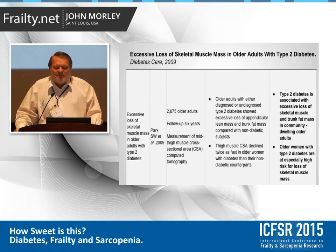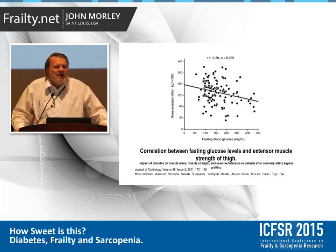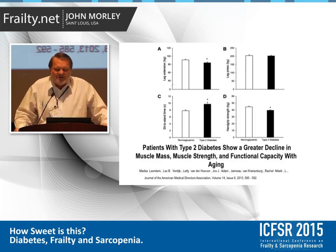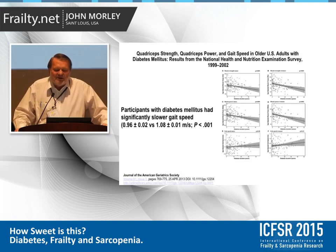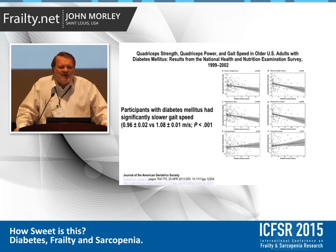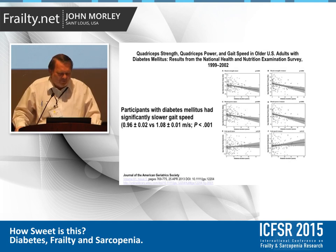Another study shows excessive loss of muscle mass, with a correlation between the height of glucose levels and the amount of muscle mass being lost. Patients with type 2 diabetes show a greater decline in muscle mass, strength, and functional capacity with aging. Diabetics are also slower walkers — and there are many reasons for this. Remember, it's not just the loss of muscle mass, but also peripheral neuropathy, various deformities, and reduced cognitive function.